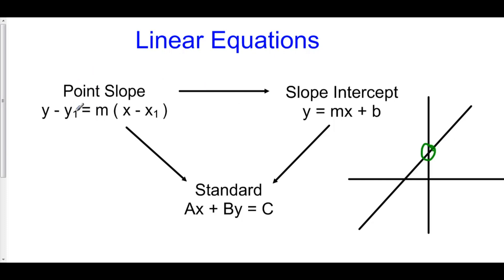Meanwhile, point slope form has x1 comma y1. x1 comma y1 is any point on this line. So for example, it could be this point right here. It could be this point right here. You know what? In fact, it could be the y-intercept.